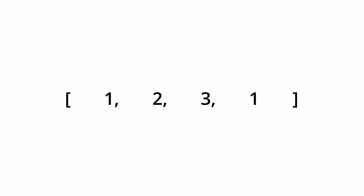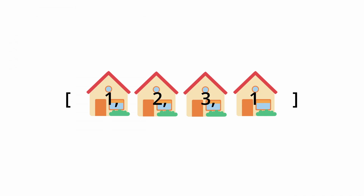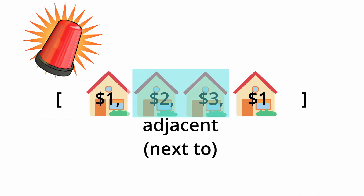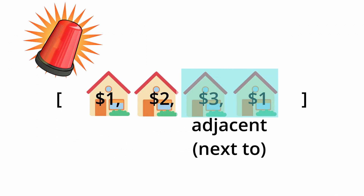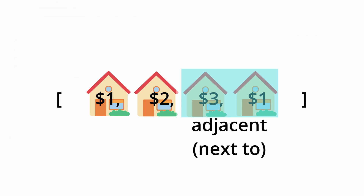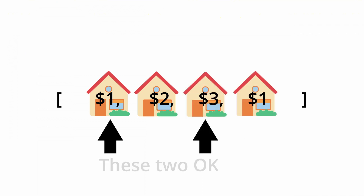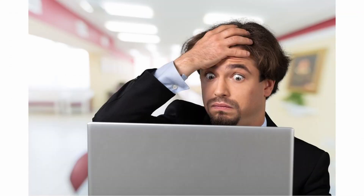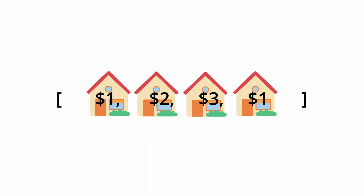We're given an array of nums where each index represents a house and each value represents the amount of money contained within the house. We're tasked with figuring out the maximum amount of money we can rob from these houses without alerting the police. The constraint is that if we rob two adjacent houses, an alarm system will be triggered. So we can't rob houses situated right next to each other — there has to be at least one house in between any two houses we decide to rob.